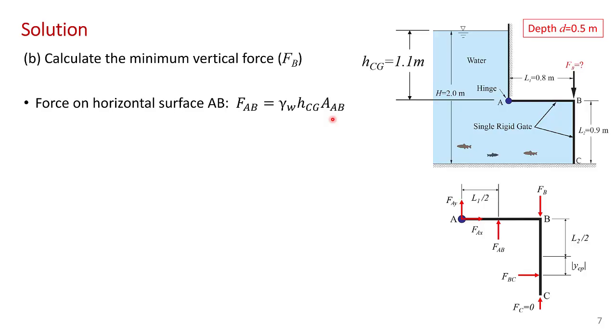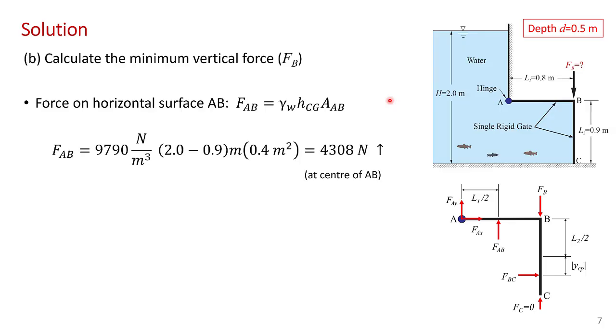We can see from simple geometry that the depth of this surface AB is 1.1 meters. So we can make the substitution: 9790 newtons per meter cubed, the specific weight of water. Here's our 1.1 meters, the depth of the centroid of that surface. And here's the surface area of AB, noting that the depth of this gate into the page is half a meter. This results in an upward force of 4308 newtons, which acts directly at the center of surface AB.